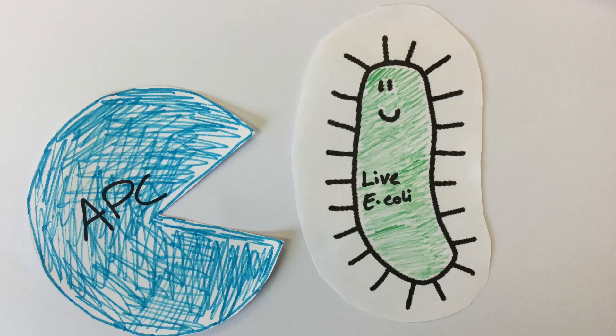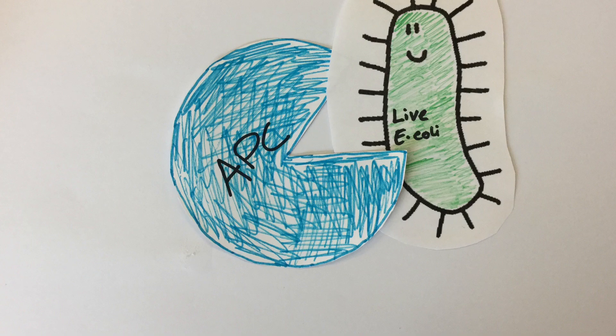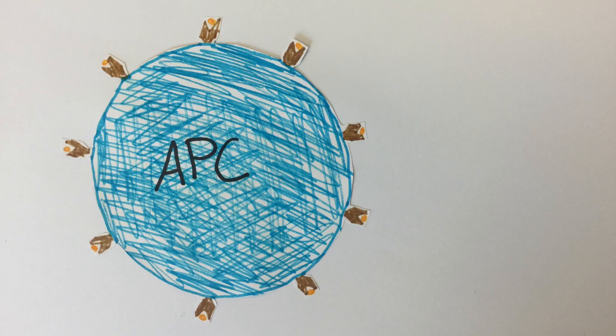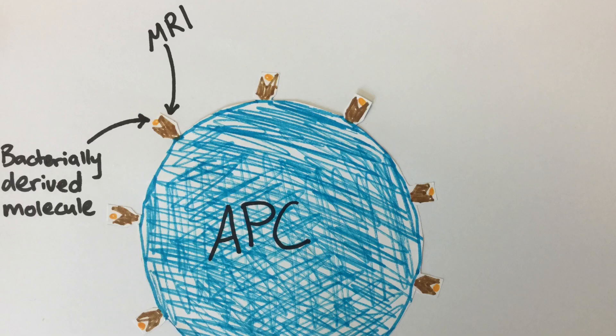The antigen-presenting cell will phagocytose the E. coli and then present a number of bacterially-derived molecules on cell surface receptors. One important bacterially-derived molecule is produced as part of the riboflavin synthesis pathway and is presented on a specific receptor known as MR1.